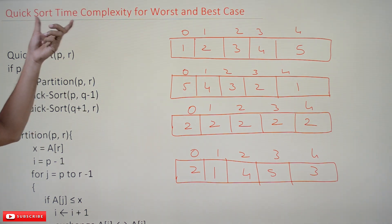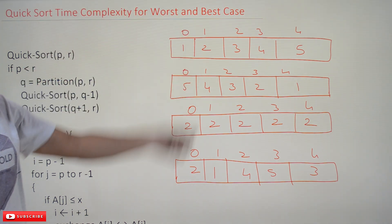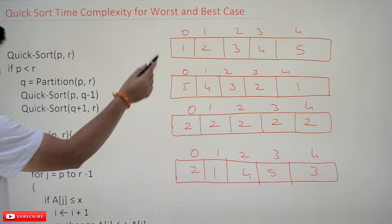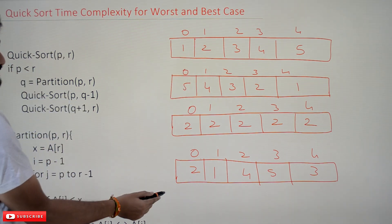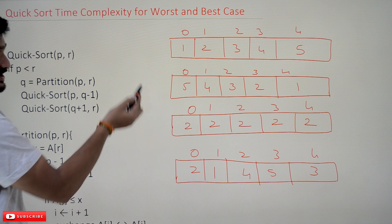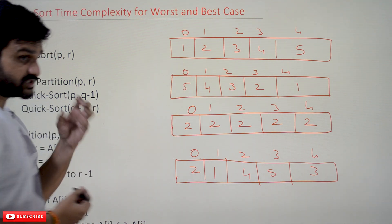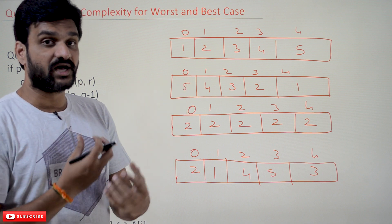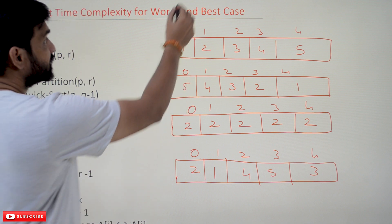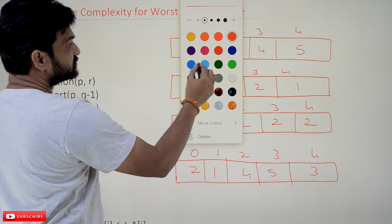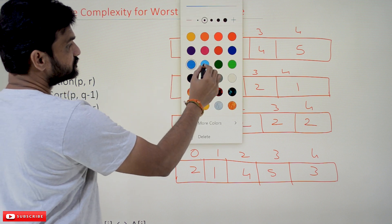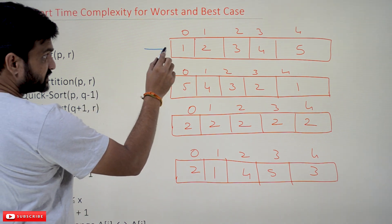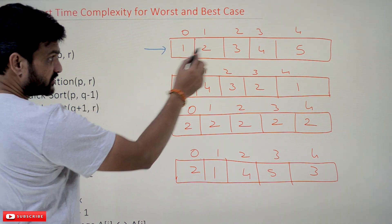Now, in this class we'll try to understand the time complexity of quicksort for the worst case and best case. I'll try to explain this using some simple example arrays. The efficiency of quicksort is a bit different when compared with all the other sorting algorithms we have seen so far.